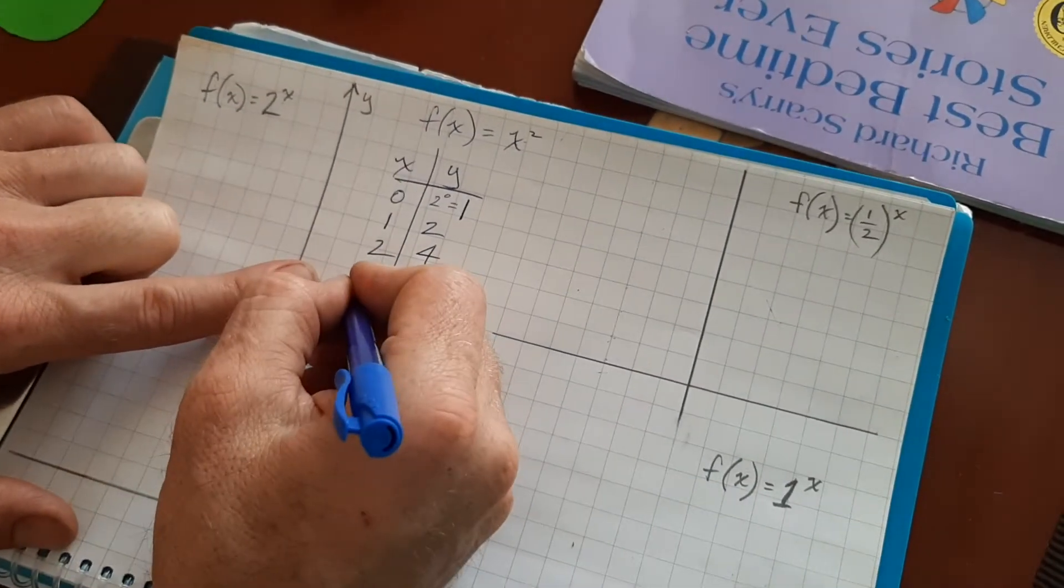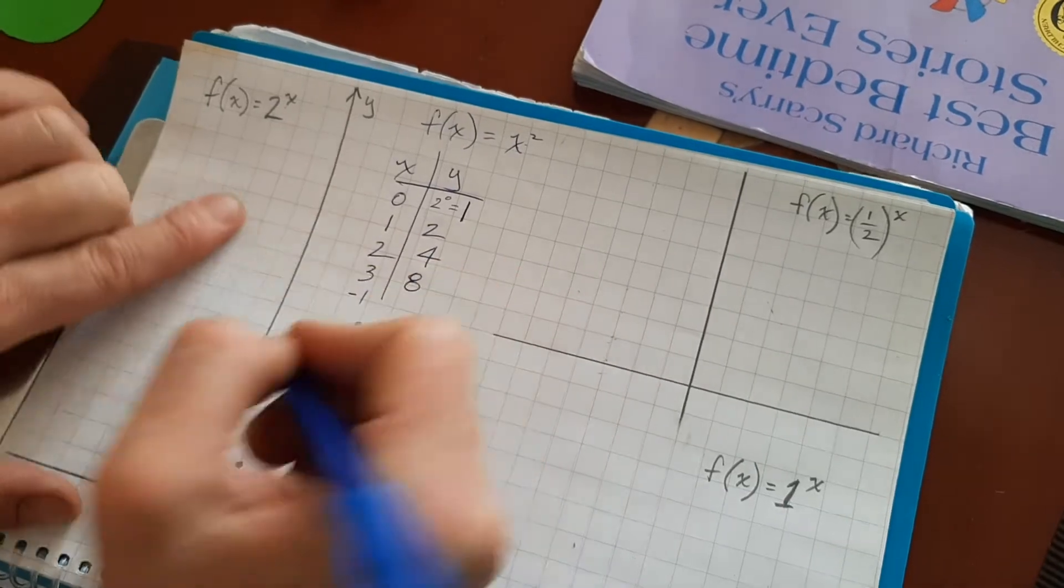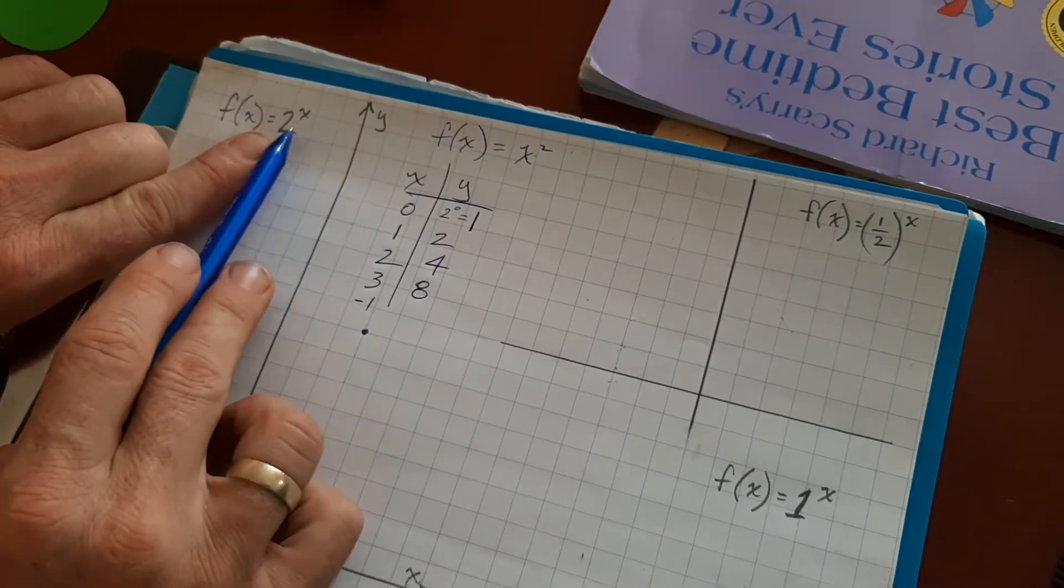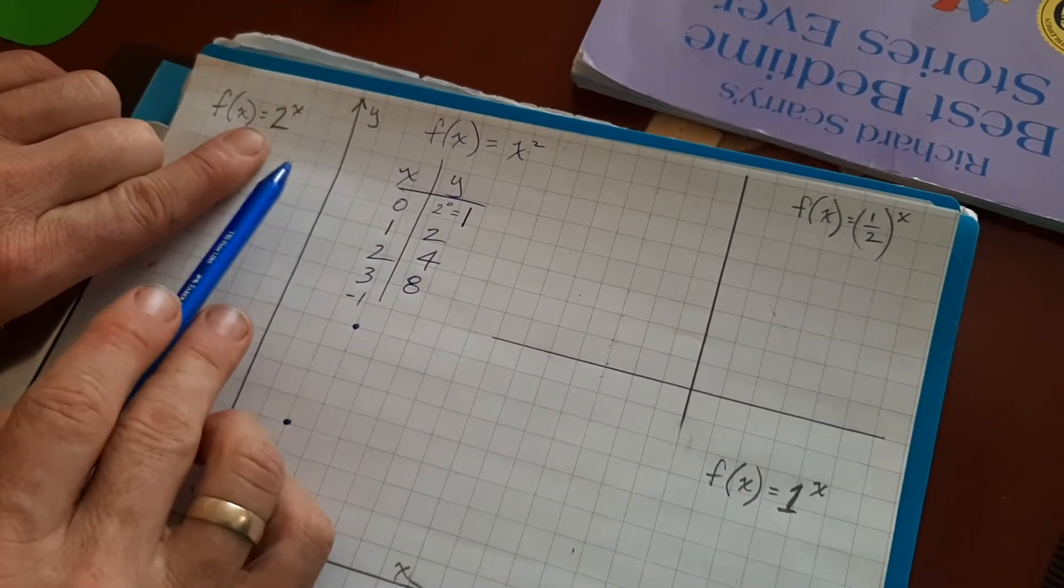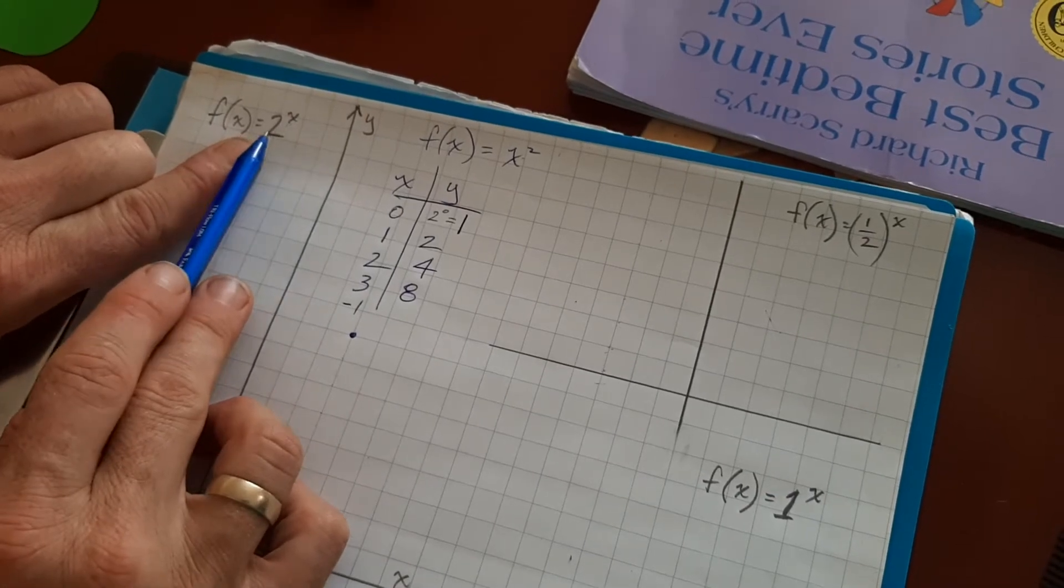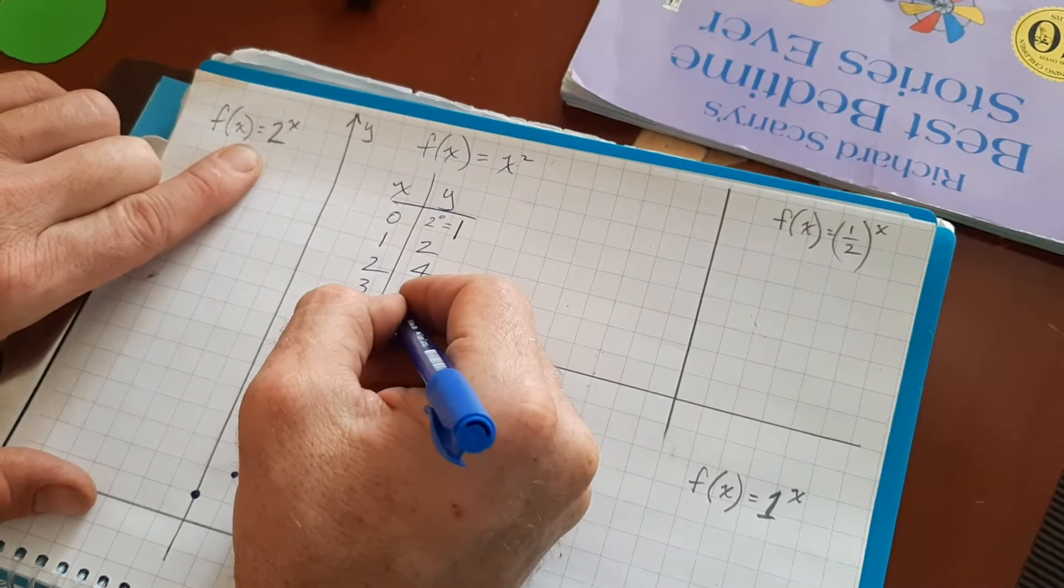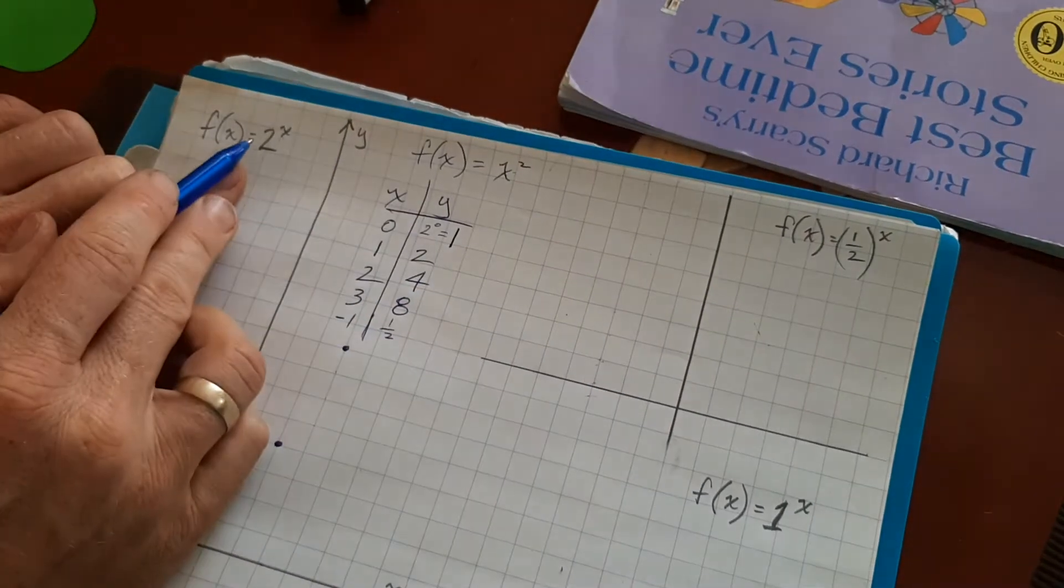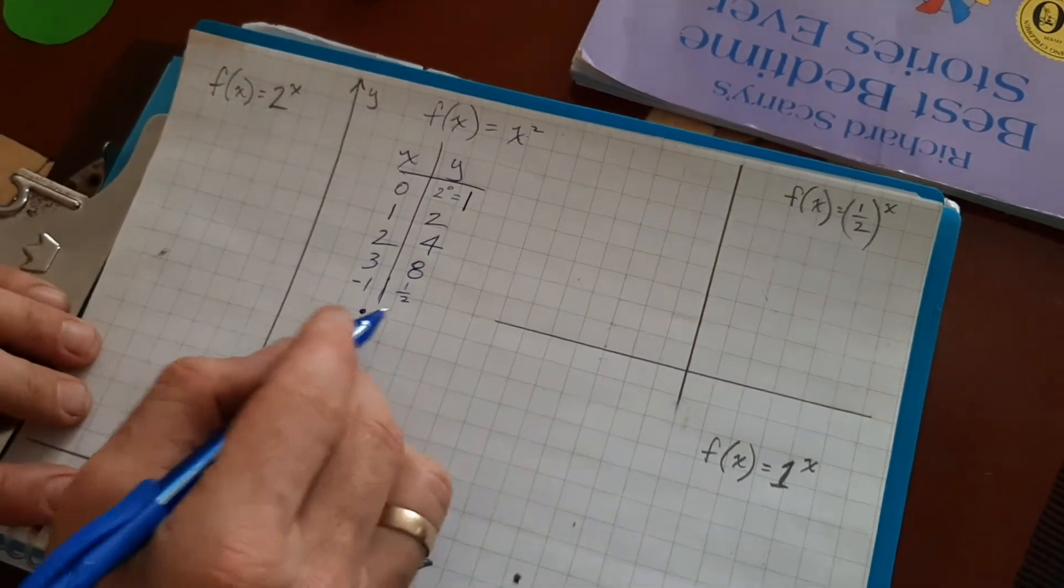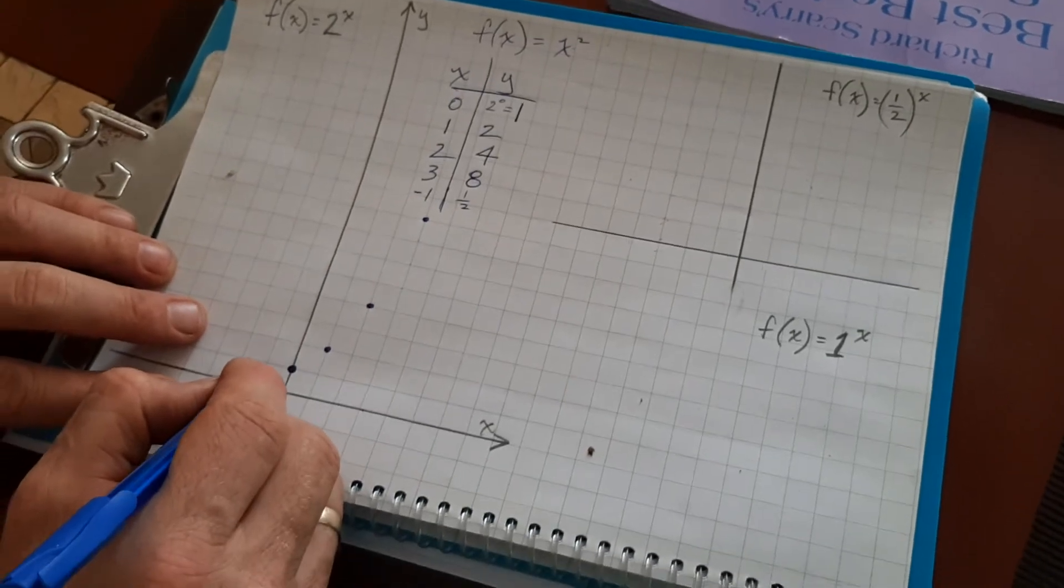Now, we need to do a negative one or two. Put a negative one in for x. What happens when you put a negative exponent? Two to the negative one. Put it in your calculator if you don't remember, you're going to get one half. It flips the base. So, negative one comma one half.